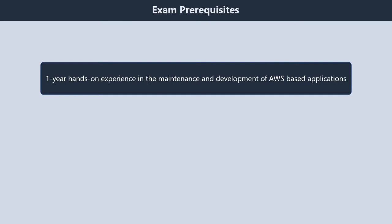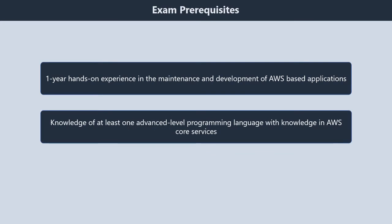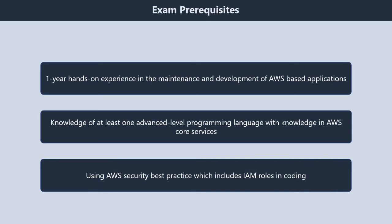Exam Prerequisites for AWS Developer Associate Exam. First, one year hands-on experience in the maintenance and development of AWS-based applications. Second, knowledge of at least one advanced-level programming language with knowledge in AWS core services. Third, knowledge of writing codes for serverless applications and the use of AWS service APIs, SDKs, and AWS CLI in writing applications.